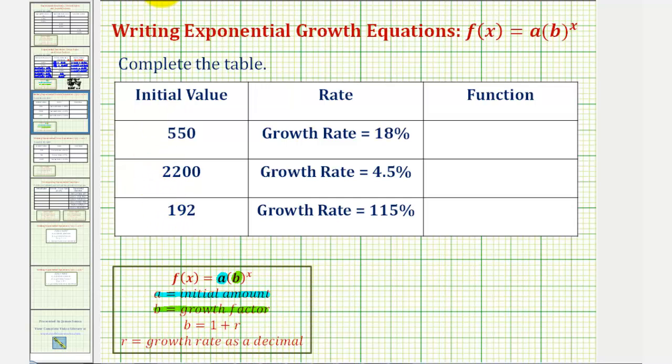So looking at this first column, notice how we're given the initial value, which would be a in the exponential function. Notice how the next column is the growth rate expressed as a percentage. But to find the growth factor, we need the growth rate as a decimal. So for the next step, let's convert these percentages to decimals.